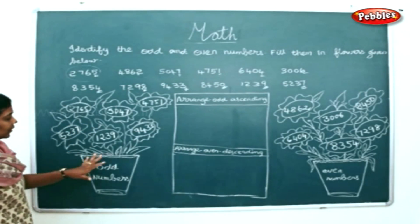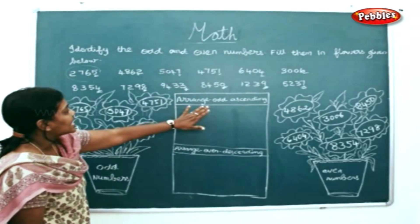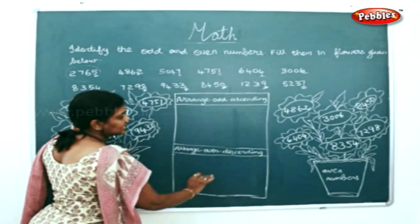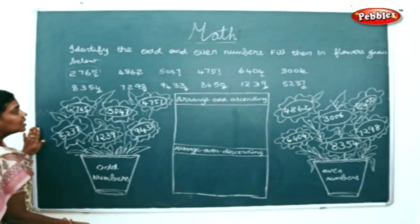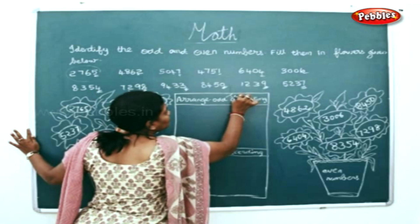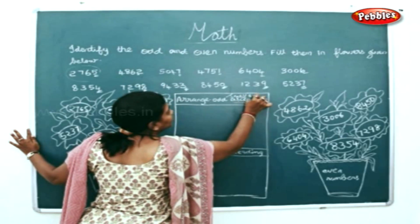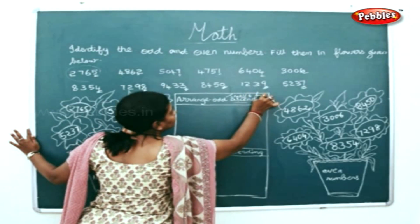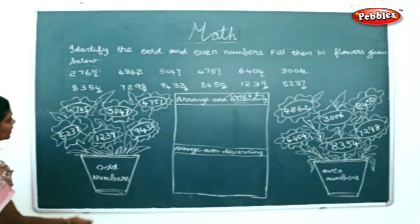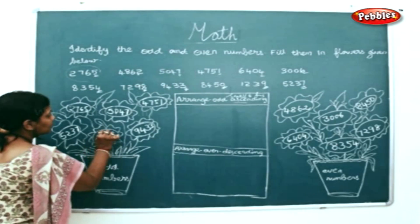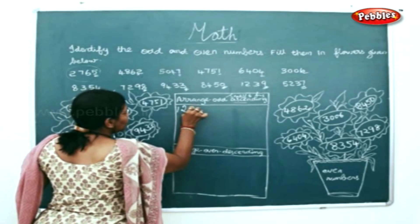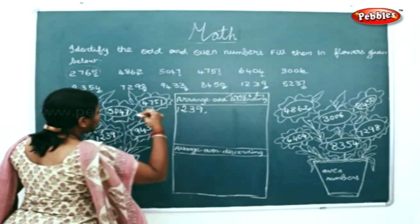Now we will arrange all the odd numbers in ascending order, and the even numbers in descending order. Ascending is nothing but small to big. Checking the thousands place, the smallest number here is 1239.